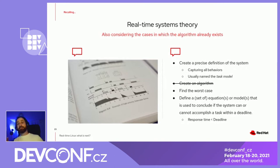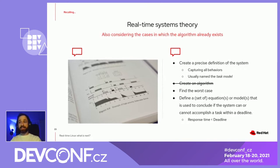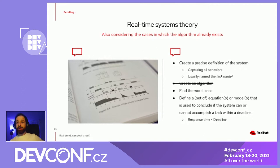From all these events, we drew using a formal method what could be the worst-case scenario for this latency. We found a set of variables and came up with a bound for the scheduling latency.